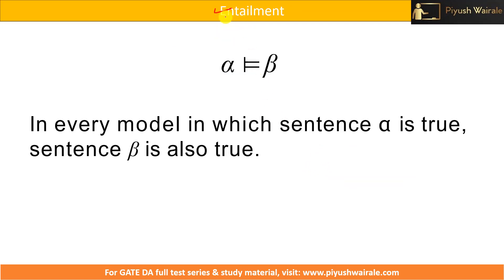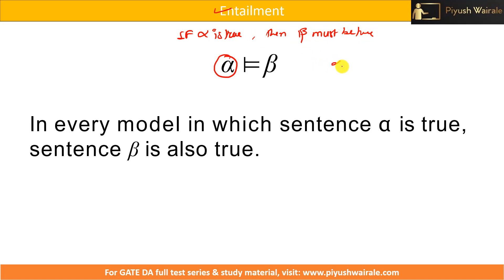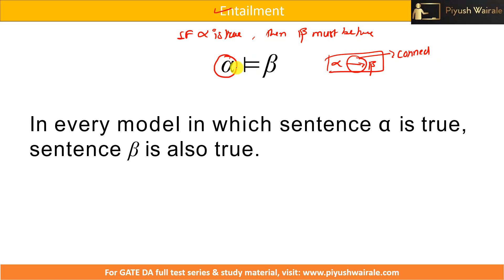What is entailment? Entailment means if alpha is true, then beta must also be true. This is not the same as alpha implies beta — that is different. Alpha implication is used as a connector, whereas here alpha entails beta is not a connector. What we are saying is: in every model in which sentence alpha is true, sentence beta is also true.